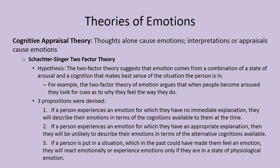The cognitive appraisal theory holds that thoughts alone cause emotions — interpretations or appraisals cause emotions, and the physical nature is not as important as what's going on in our brains. The Schachter-Singer two-factor theory believes that emotion comes from a combination of a state of arousal and a cognition that makes the best sense of the situation a person is in. When people become aroused, they look for cues as to why they feel the way they do — that spidey sense in the back of your neck that makes you look around and try to figure out what's triggering it.